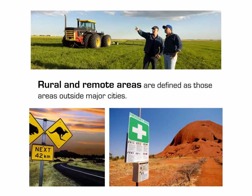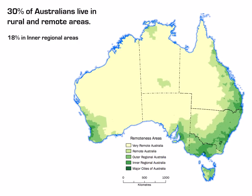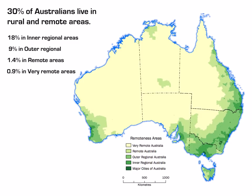Rural and remote areas are defined as those areas outside major cities. You can clearly see on this map that there is quite a large proportion of the population living in rural and remote areas. The majority of Australia would be considered very remote, and there are only small pockets that are considered major cities, with the rest dominated by remote, outer regional and inner regional.